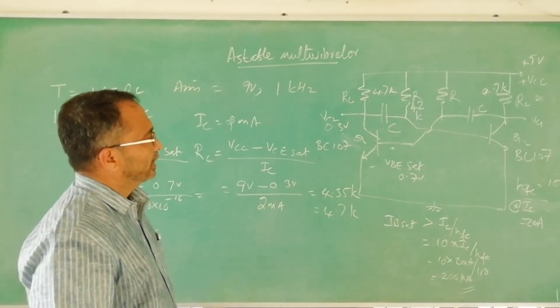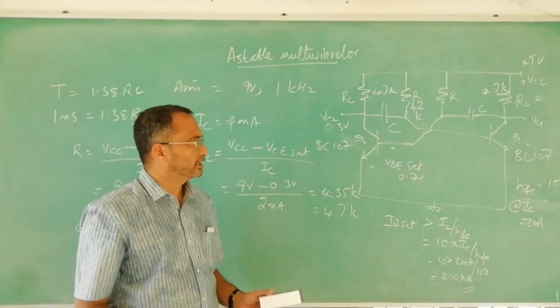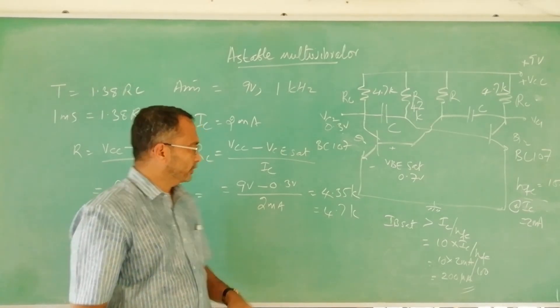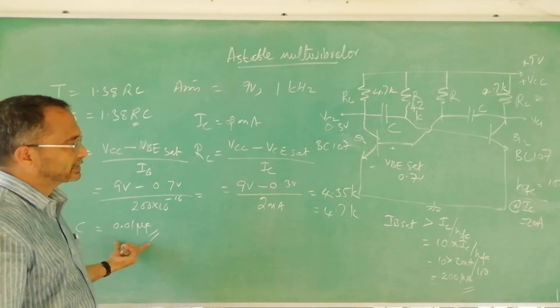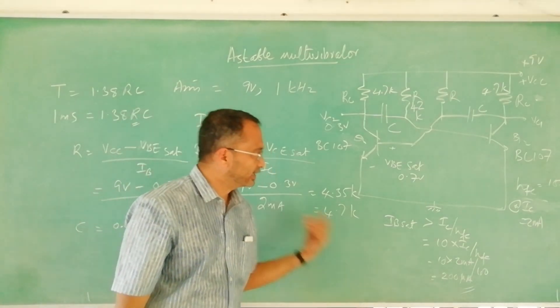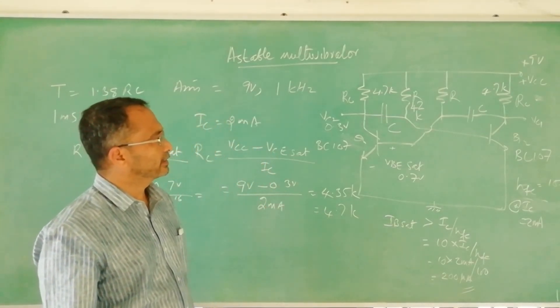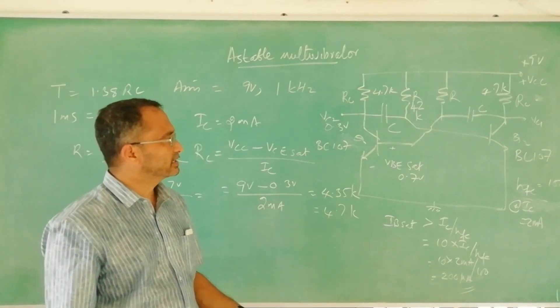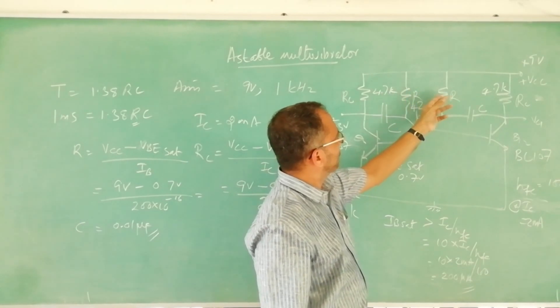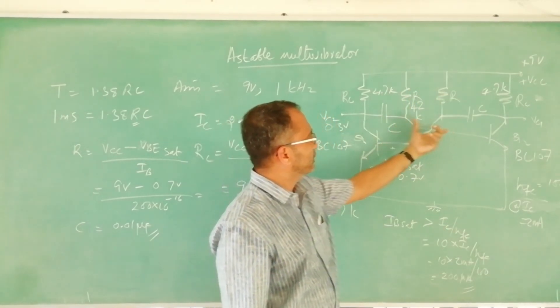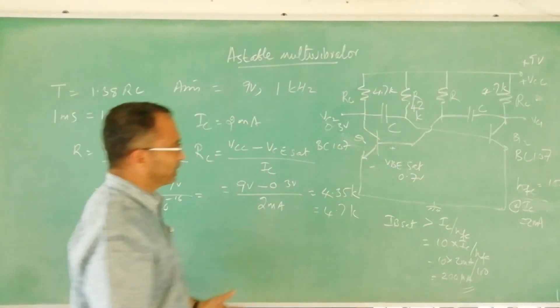This is the way of doing it. This is the simplest astable multivibrator. This is the way of finding the values for R's and C's and RC. We got only two pairs of resistors and one pair of capacitors here.